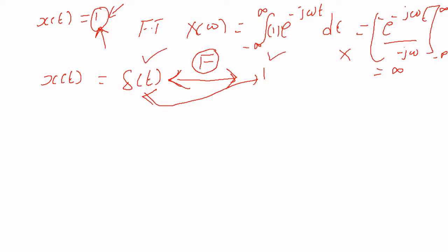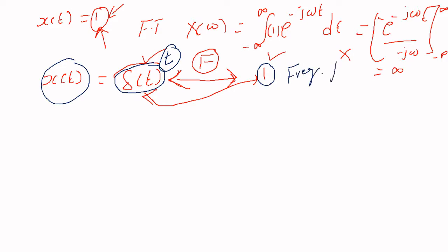So δ(t) is in the time domain and 1 is in the frequency domain. Now recall: if we have a rectangular signal x(t) defined from −a to a, after taking the Fourier transform we get a sinc wave. If we draw the characteristics, the time domain is rectangular and the frequency domain shows a sinc shape.